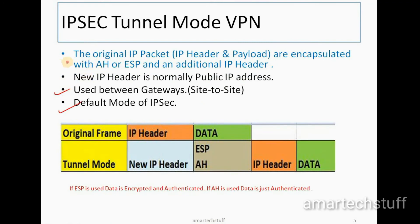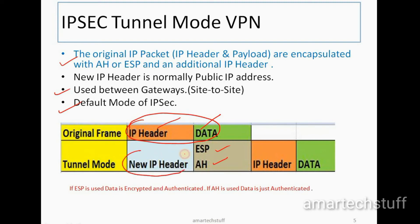In tunnel mode, the original IP packet — which contains the IP header and the payload — is encapsulated with AH or ESP. In addition to that, an additional new IP header is added. Public IP addresses are normally used for this new outer header. This is the key characteristic of tunnel mode: the original packet is fully encapsulated with a new IP header added.